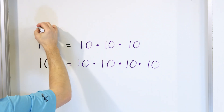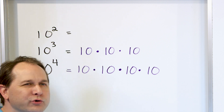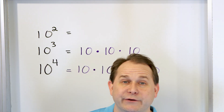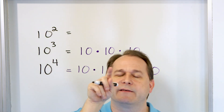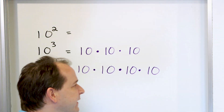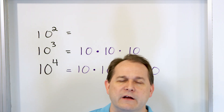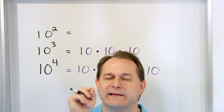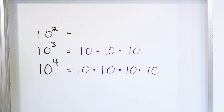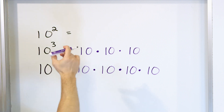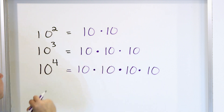You can see the pattern here. What happens when we have 10 raised to the power of 2? When you raise it to the power of 2, we have another word we use for that — we say it's 10 squared. When you see something is squared, it just means the power or the exponent is a 2. When you see something cubed, that's another word that means power of 3. Something squared is a power of 2; something cubed is a power of 3.